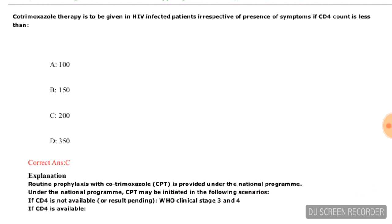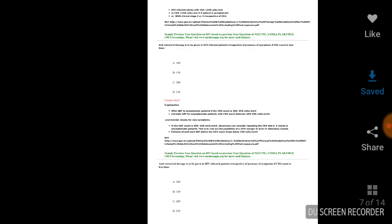Antiretroviral therapy is to be given in HIV-infected patients irrespective of the presence of symptoms if the CD4 count is less than — options are 100, 150, 200, or 350. The correct answer is less than 200, so option C is correct.